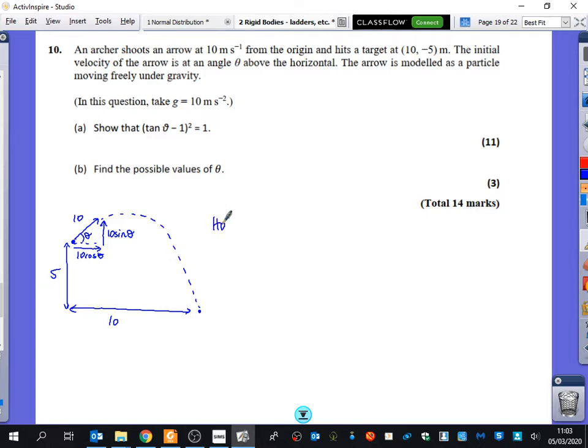Okay, so horizontally we know that the distance is equal to the speed times the time. So time equals 10 divided by 10 cos theta, which is 1 over cos theta. I found out time because time is the bridge value that will take me between them.